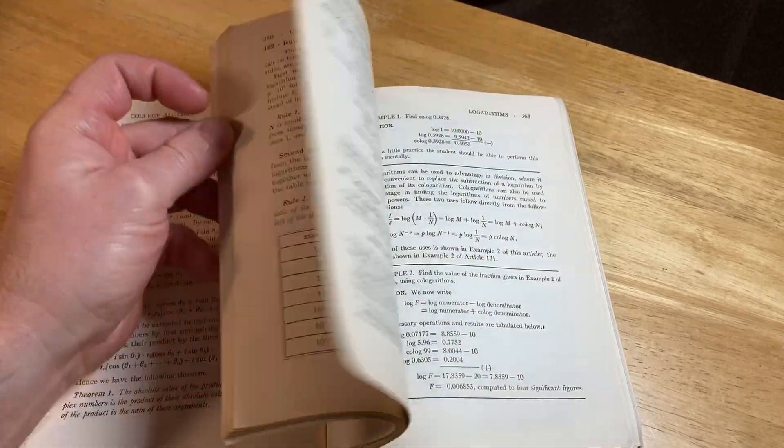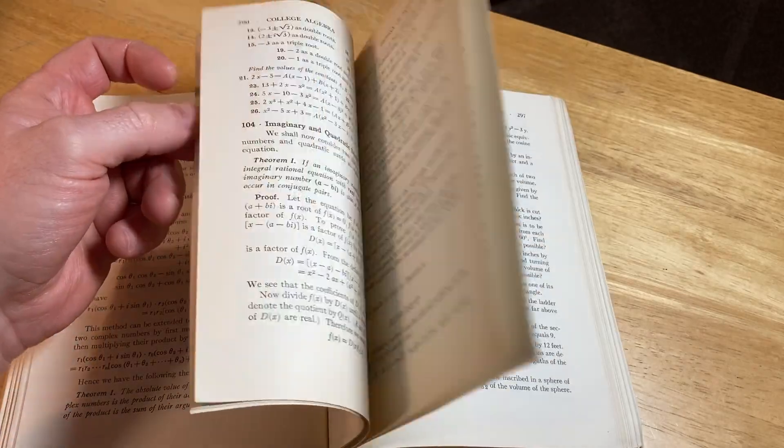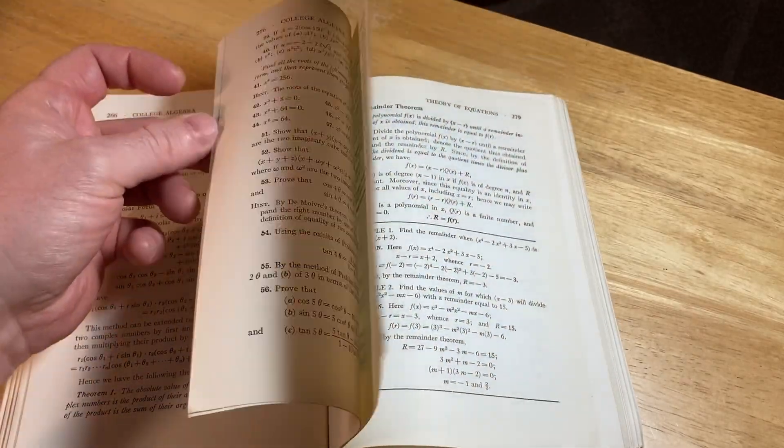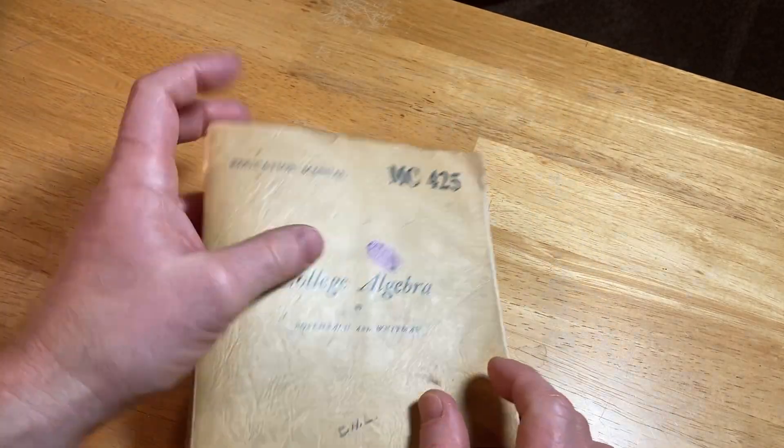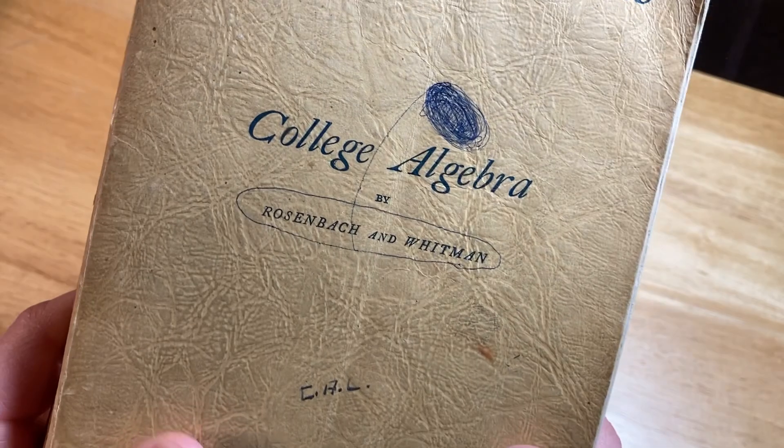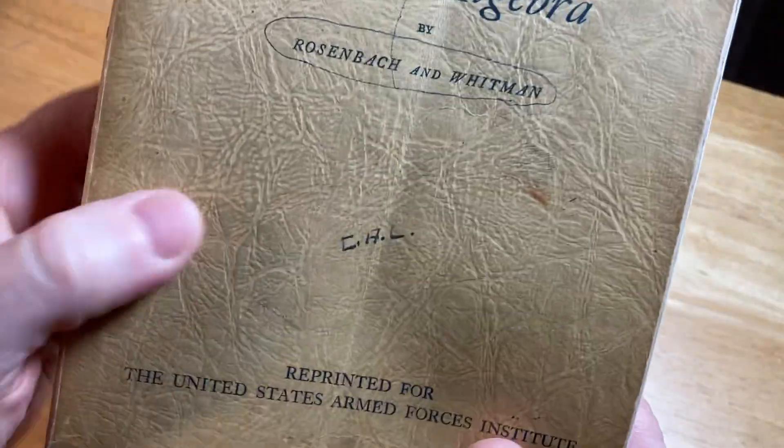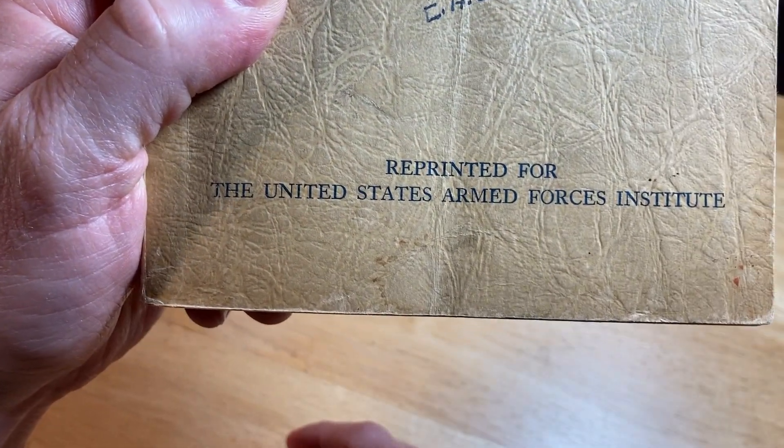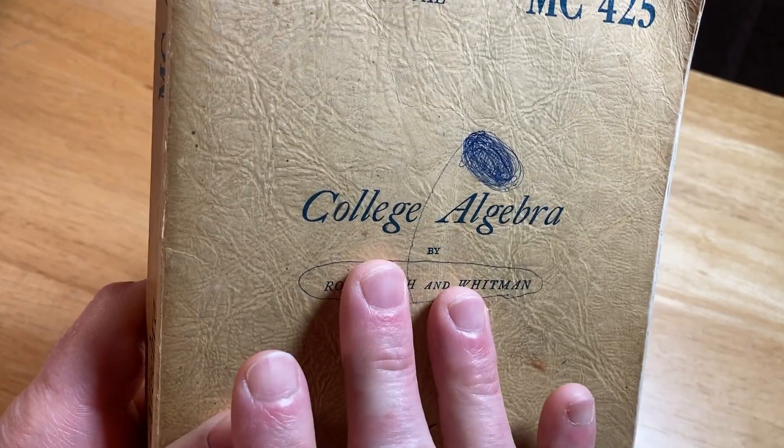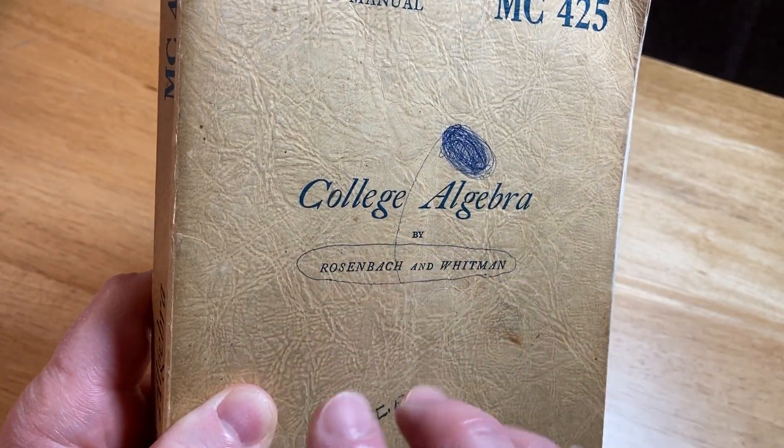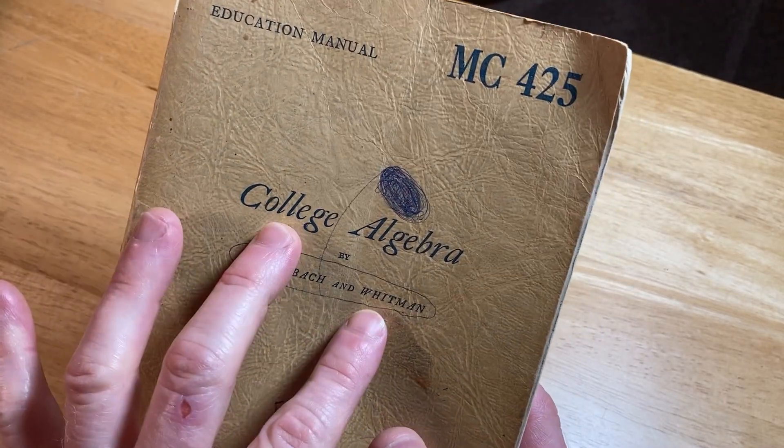This is an education manual that was printed by the United States Armed Forces Institute, which no longer exists. It is College Algebra by Rosenbach and Whitman, education manual MC425, reprinted for the United States Armed Forces Institute. This book was already in use, and I'm pretty sure the books they picked to reprint were really good books.